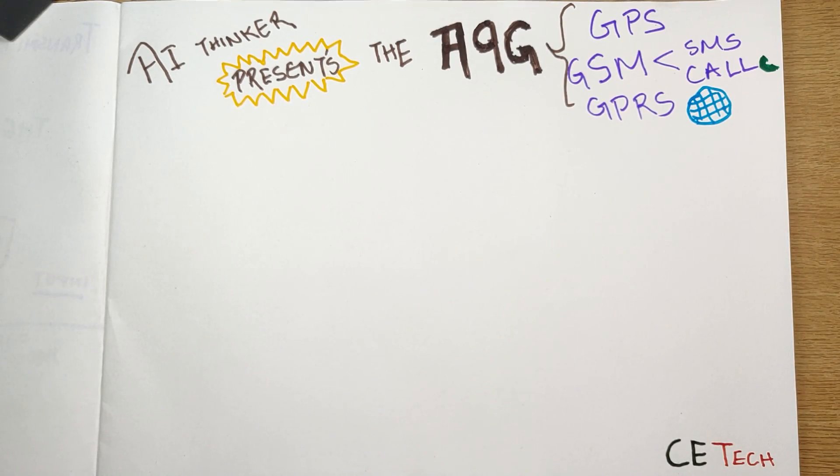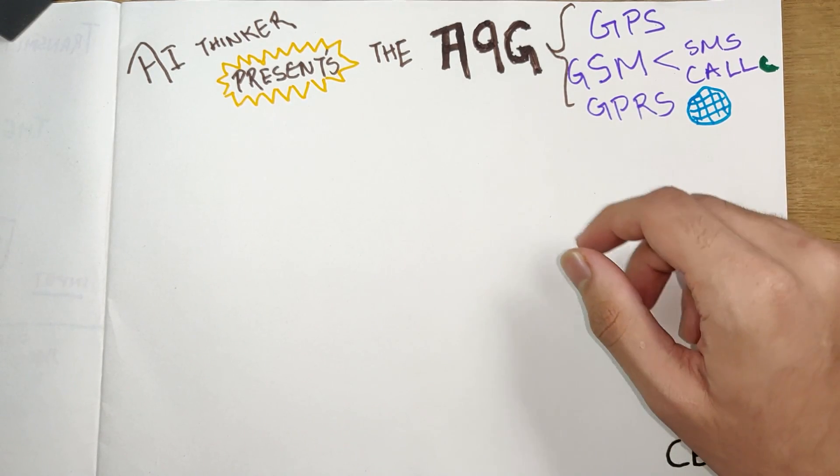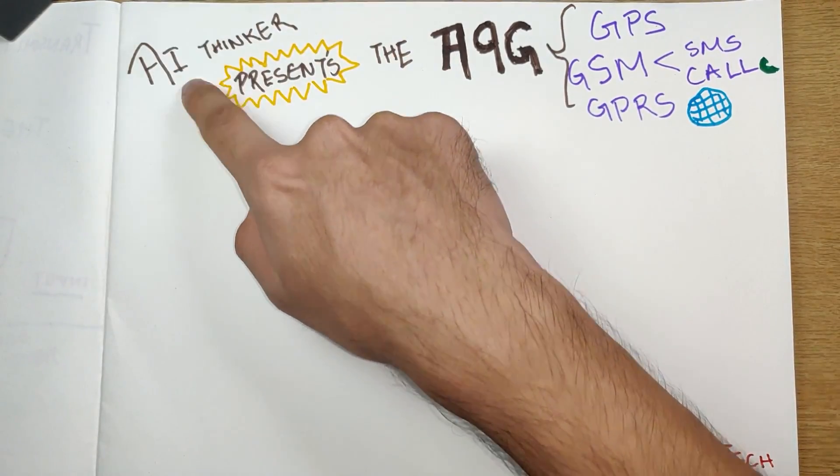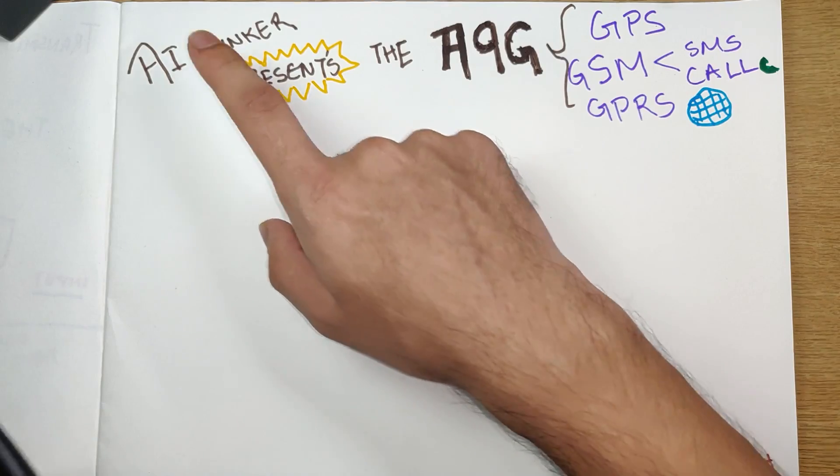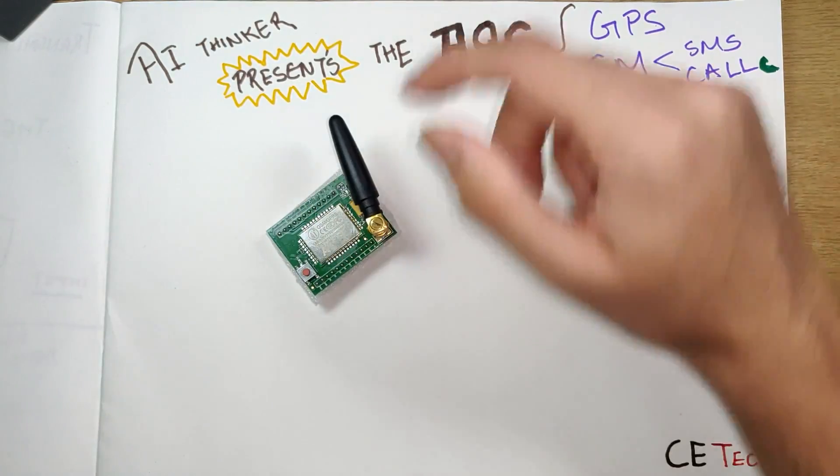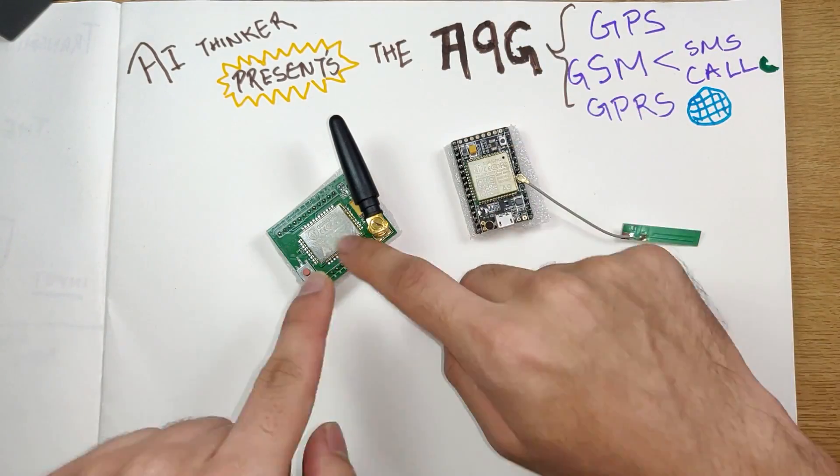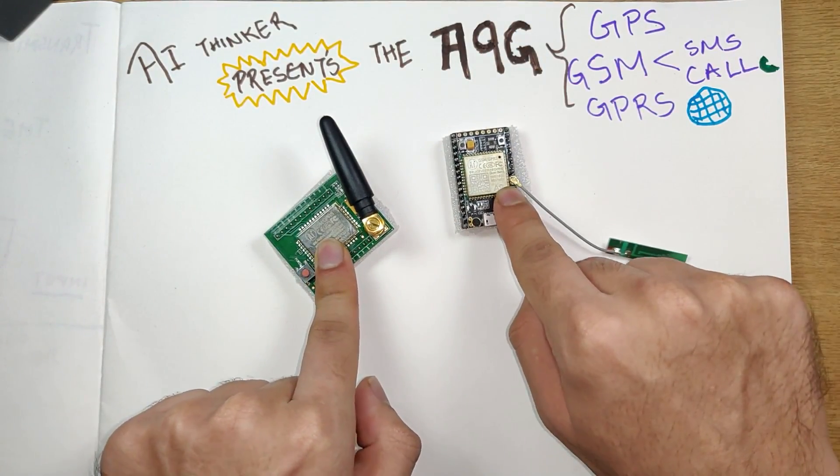Hey, what is up guys, Akarsh here back with another video. Today we'll be looking at a chip from AI Thinker. AI Thinker is a big Chinese company which manufactures wireless modules like the A6 or the A9. We will be looking at the A9G.